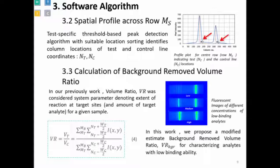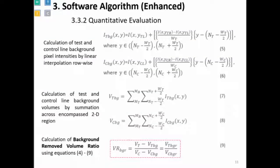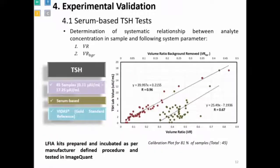The new VR equation subtracts a constant background portion from both test and control lines, which improves the final dynamic range of the output. We tested this on TSH, which typically suffers from a lower sensitivity range. With the original VR, we achieved an R of 0.67, and with the background-subtracted VR we achieved an R of 0.96. This was measured across 45 different samples collected from external laboratories.